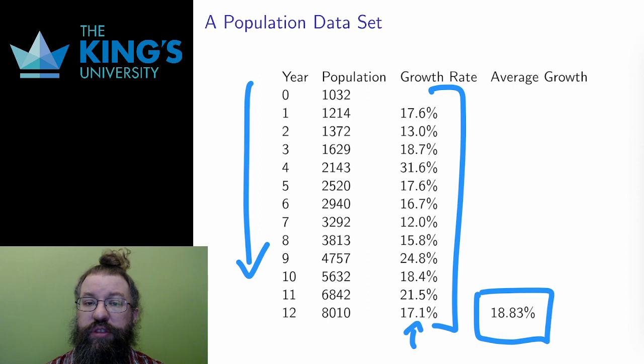There are obviously some differences, good years and bad years, 31.6% or 12%. However, there does seem to be some consistent behavior. This population increases by something near 20% per year. Percentage growth is approximately not a bad way to understand this particular population.